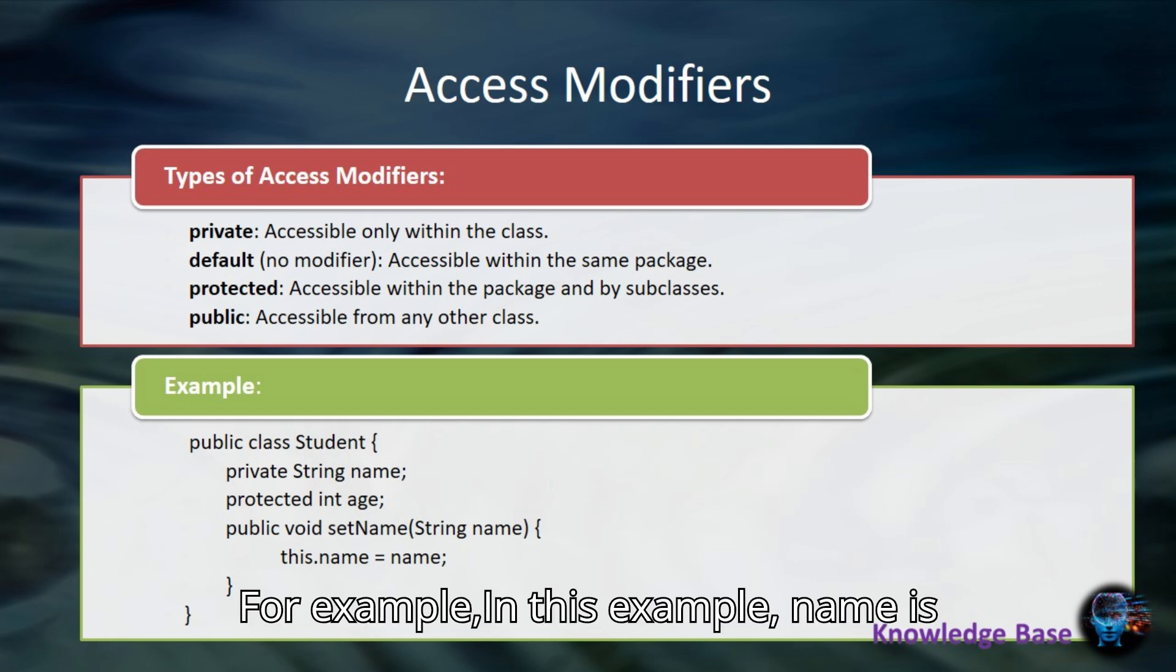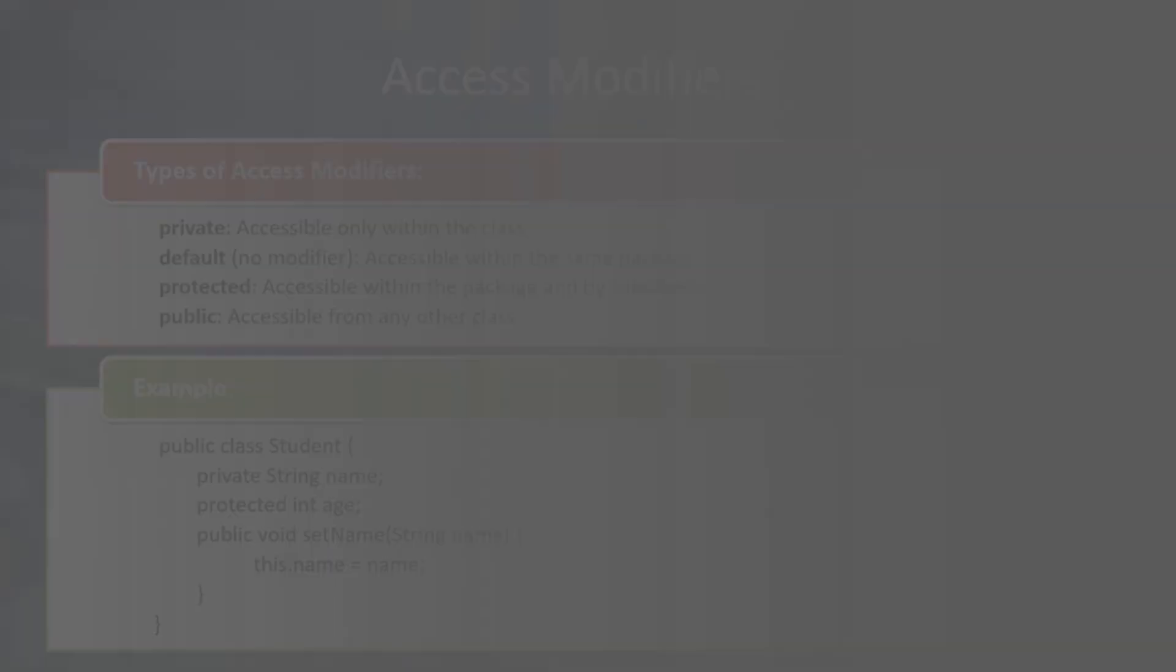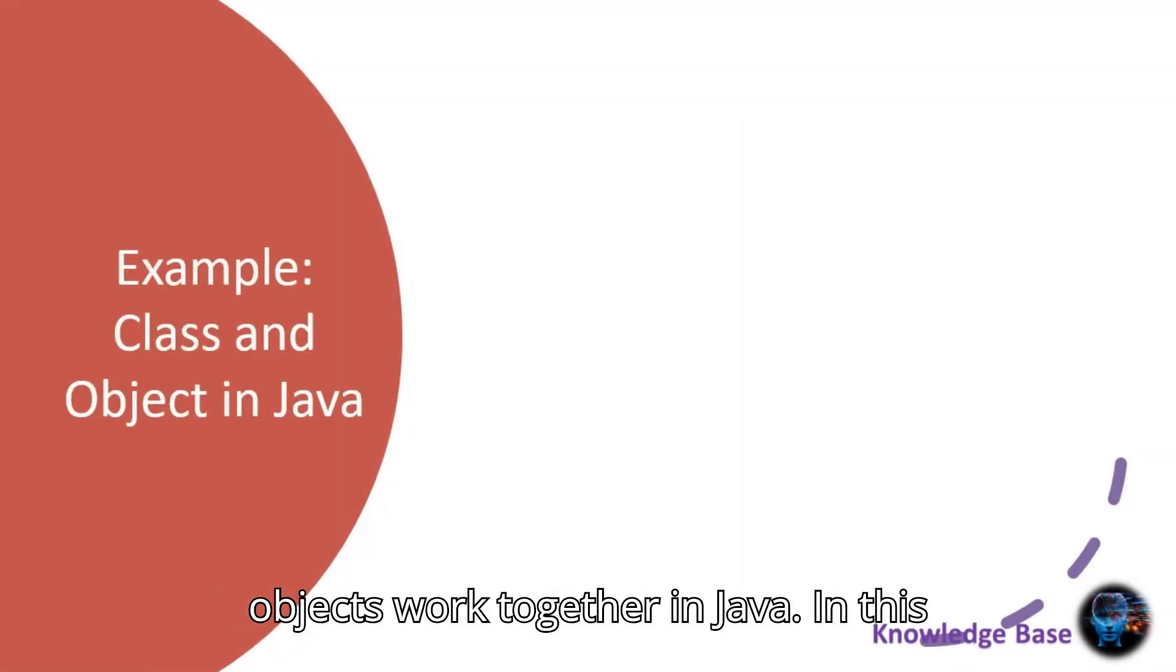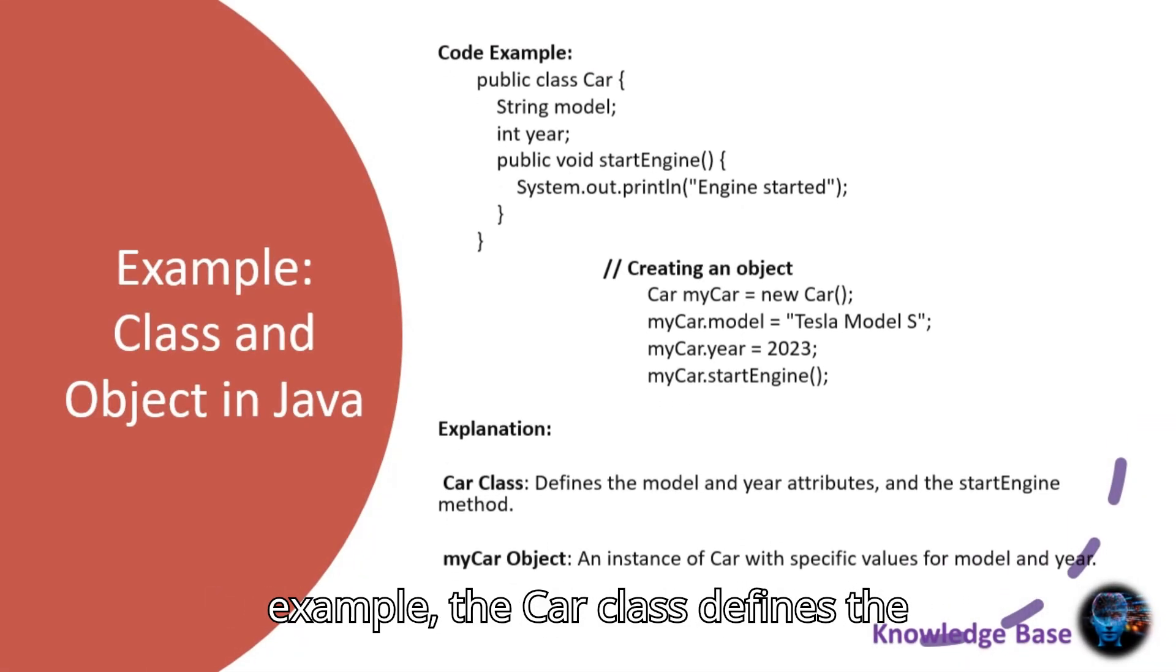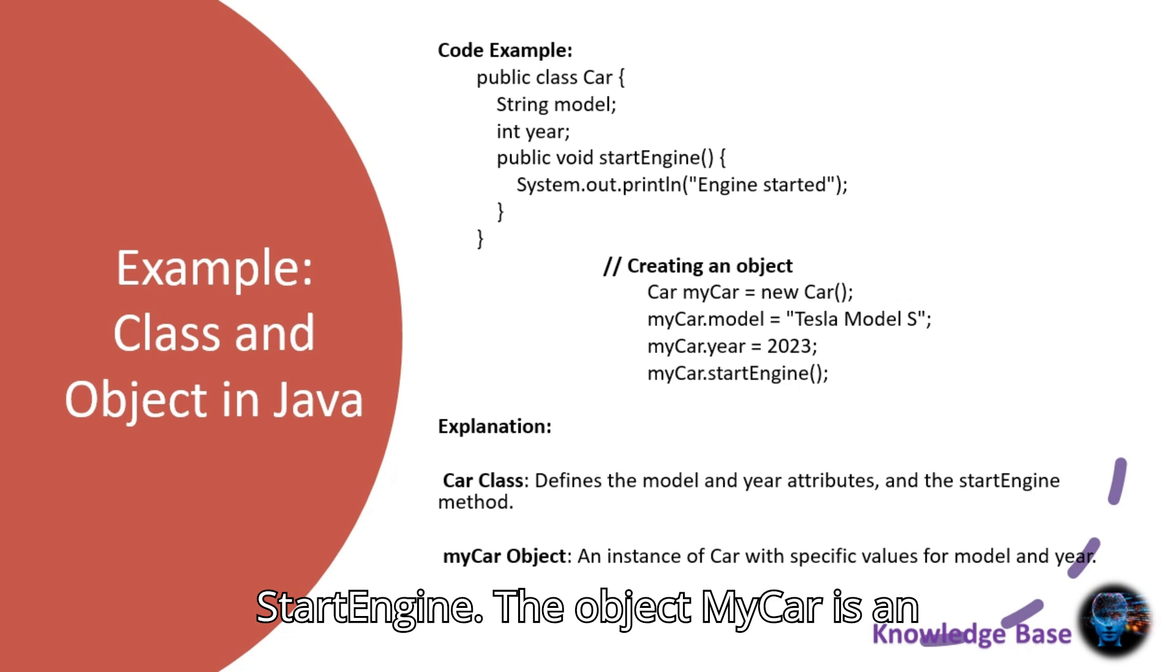For example, in this example, name is private, age is protected, and the setName method is public. Let's see an example of how classes and objects work together in Java. In this example, the Car class defines the attributes model and year, and the method startEngine. The object myCar is an instance of Car with specific values for model and year, and it can call the startEngine method.